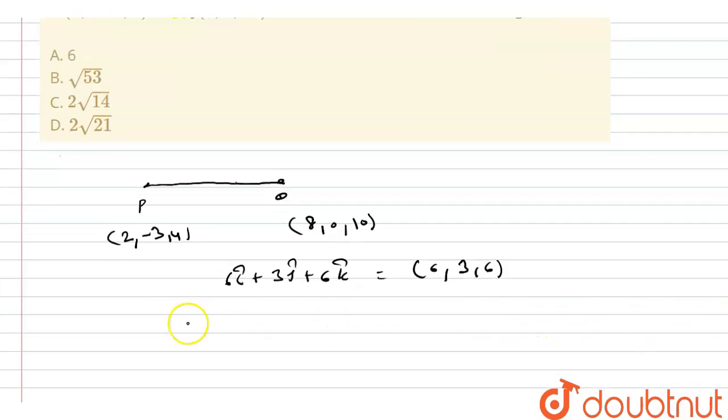Now equation of the line: we can say (x - 2)/6 equals (y + 3)/3 equals (z - 4)/6 equals lambda.